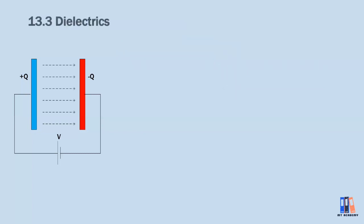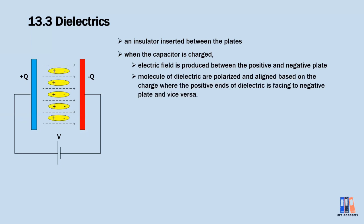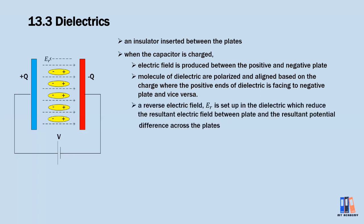Moving on to the next topic — the dielectric is an insulator inserted between the plates, such as paper or mica, and they do not conduct electricity. However, when the capacitor is charged, the electric field produced between the plates polarizes the molecules of the dielectric. All the dielectric molecules align themselves based on their charge, where the positive end of the dielectric is attracted to the negative plate and the negative end faces the positive plate. Due to this alignment, there is a reverse electric field opposite to the field produced by the plates, which reduces the resultant electric field and the resultant potential difference across the plates.